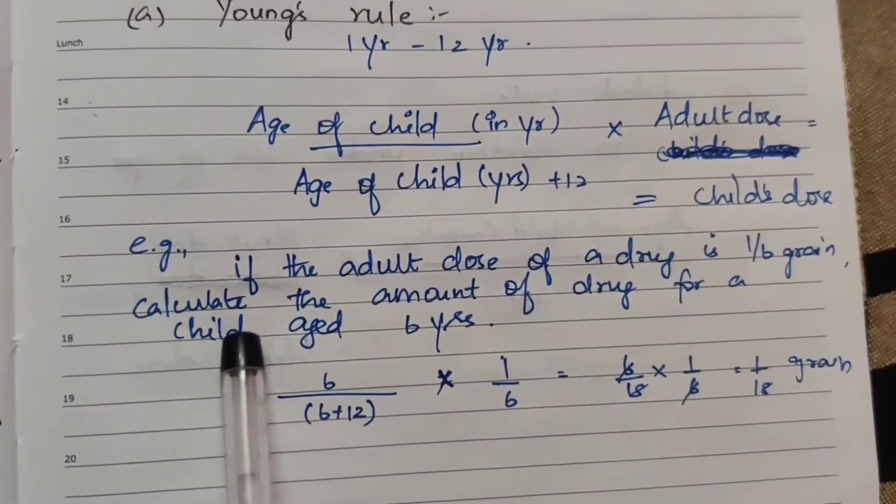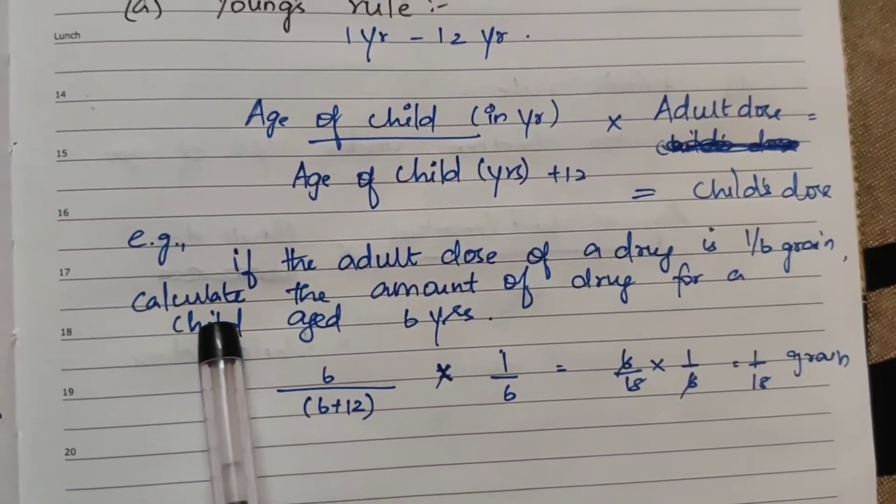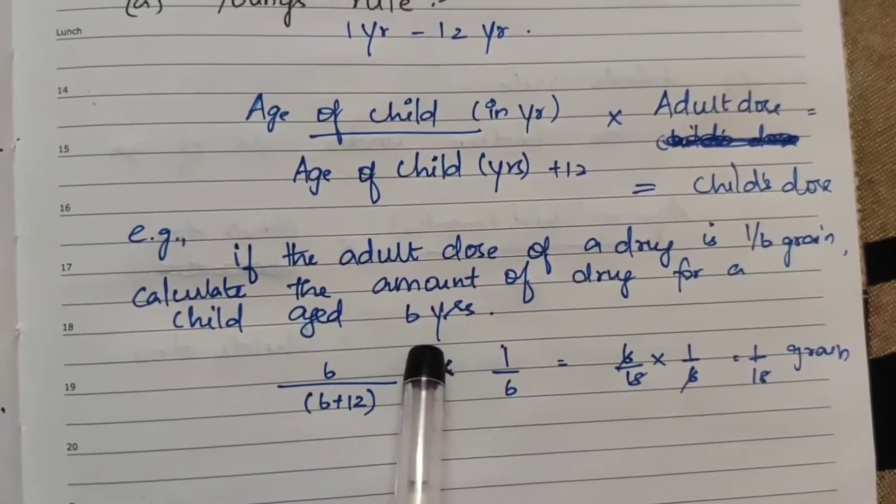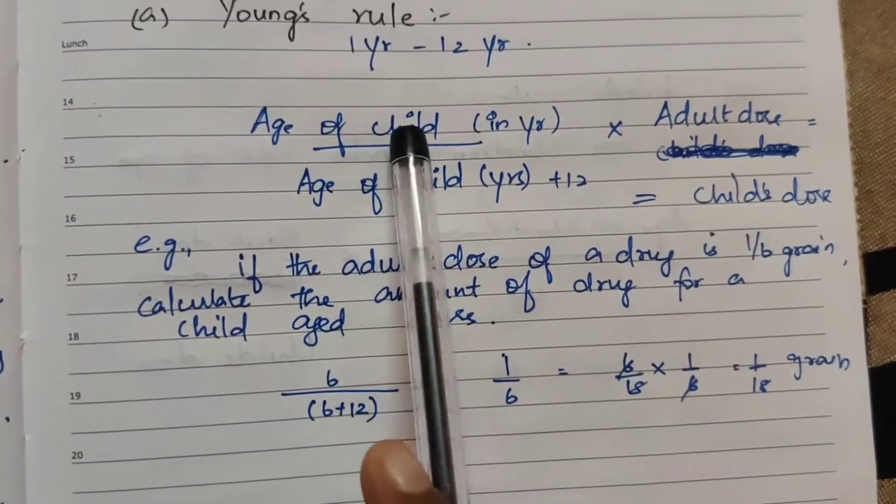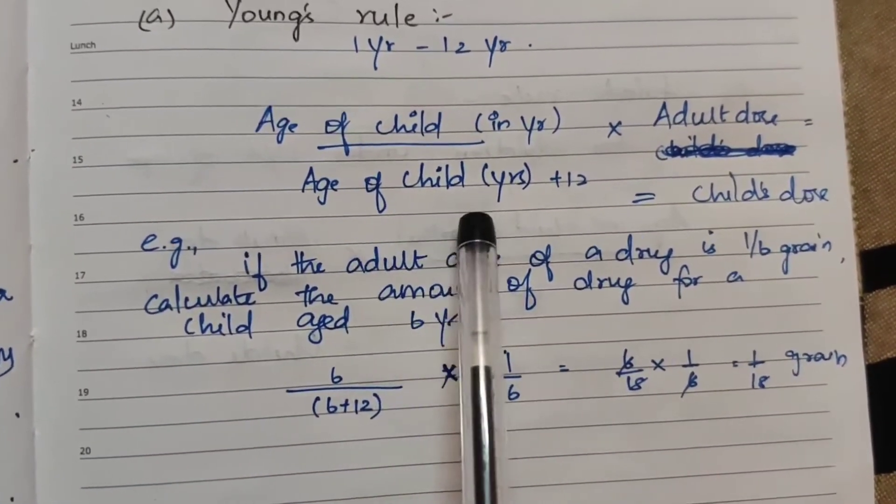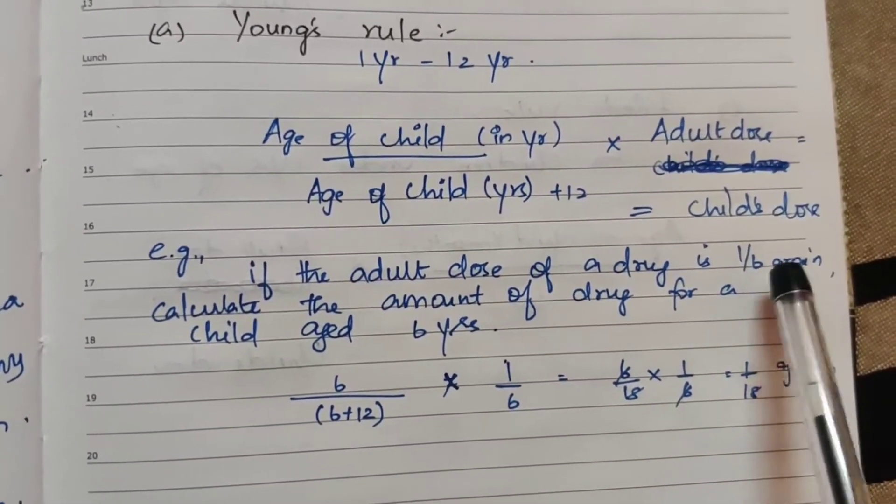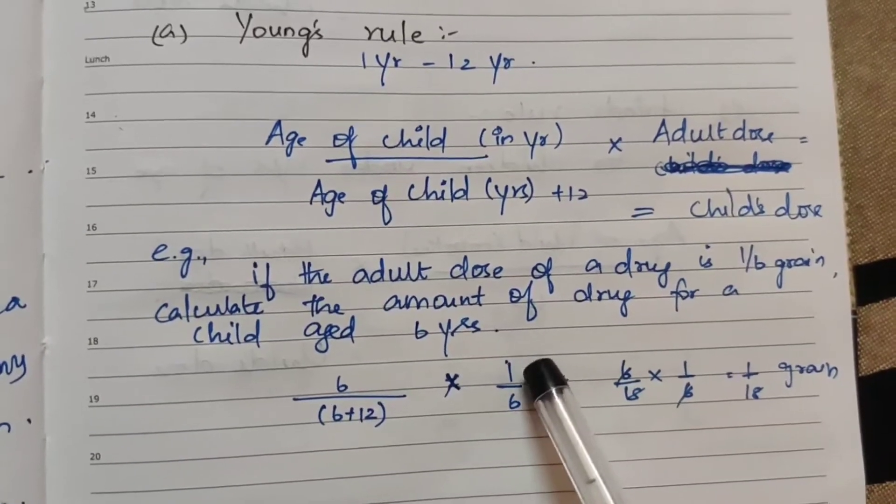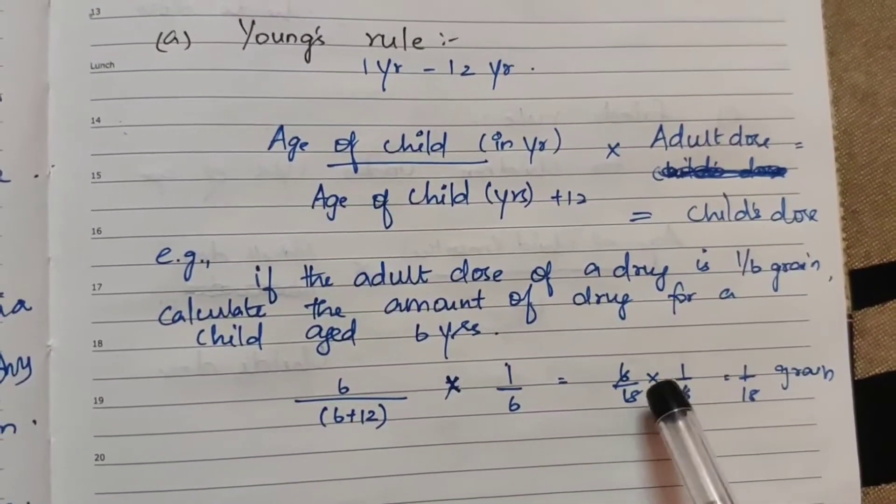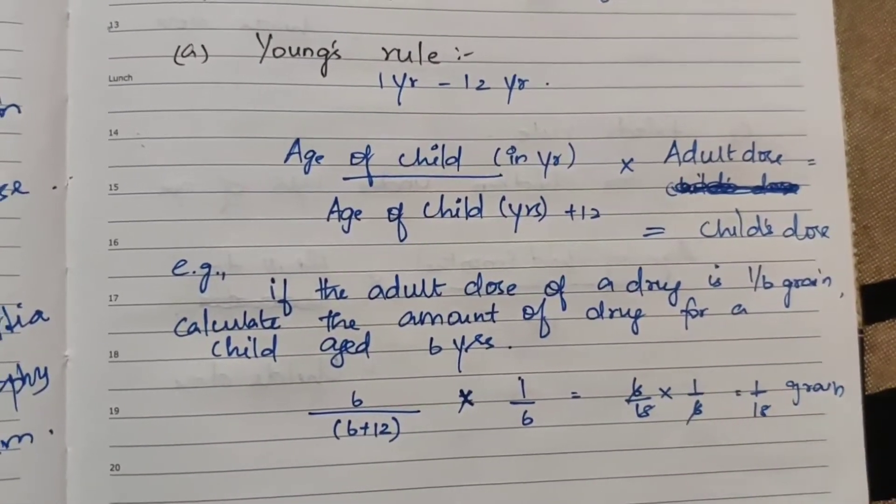For example, if the adult dose of a drug is 1/6 grain, calculate the amount of drug for a child age 6 years. The age of child is 6 divided by 6 plus 12, that is 18, multiplied by 1/6. So 6 divided by 18 multiplied by 1/6, the answer is 1/18 grain.